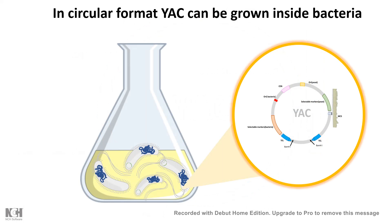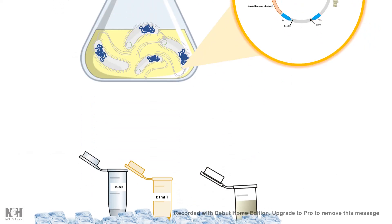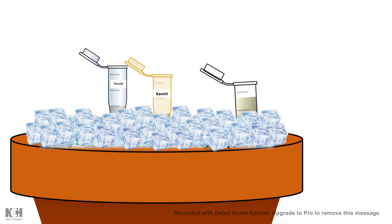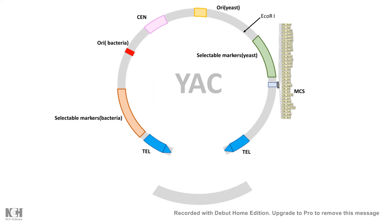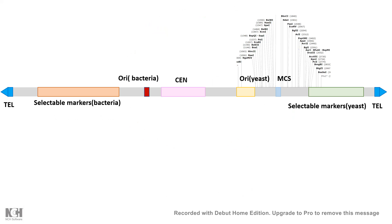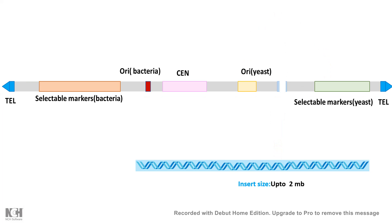In its circular format, the YAC can be grown inside bacteria. It can be isolated just like a plasmid, and then we digest it using BamH1. Remember, the BamH1 sites were flanking the telomeres, so when you restrict with BamH1, a certain fragment — the stuffer fragment — falls off and is washed away. The circular vector is now linearized, and this linearized vector can then be restricted with another enzyme present in its multiple cloning site, such as EcoR1.